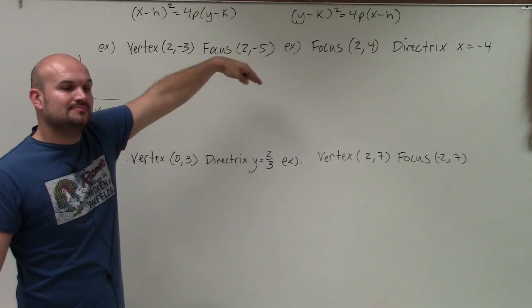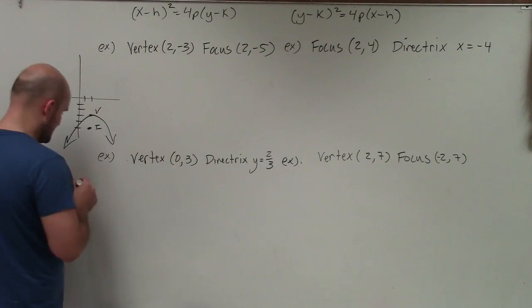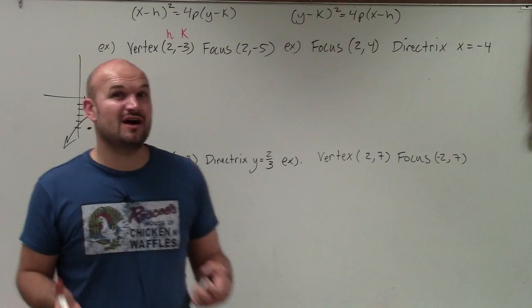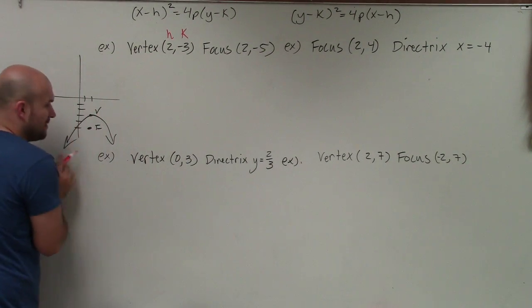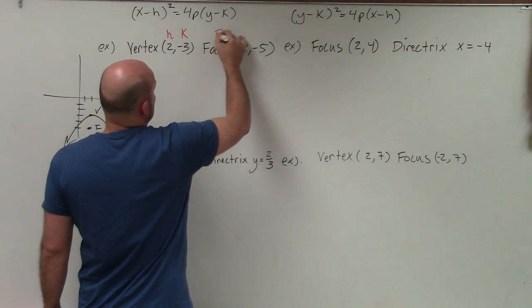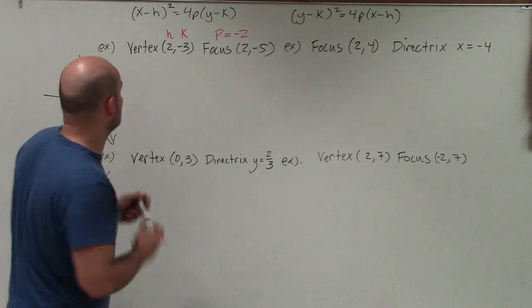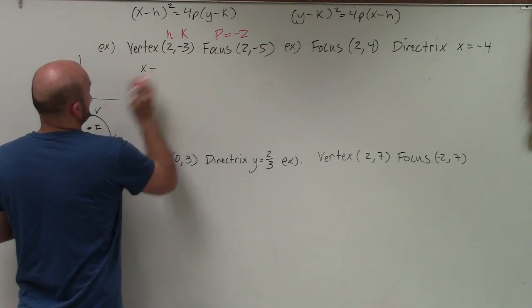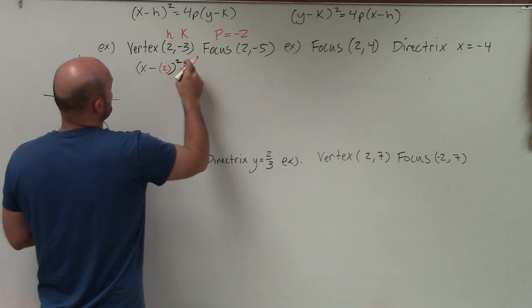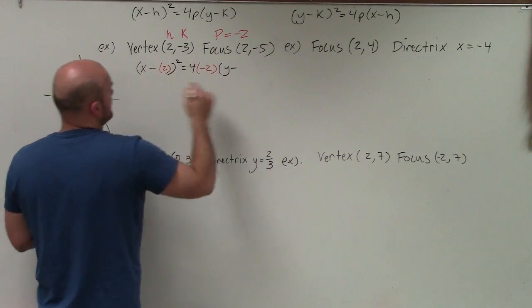So we'll use the equation for a downward-opening parabola. Here, h and k represent the coordinates of the vertex: h is the x-coordinate and k is the y-coordinate. So h = 2 and k = -3. The only other piece of information we need is p. Since p is the distance from the vertex to the focus, I can count: 1, 2 — but since it's going down, p equals negative 2. Now I plug everything in: (x − 2)² = 4(−2)(y − (−3)).